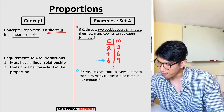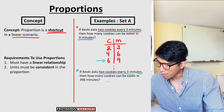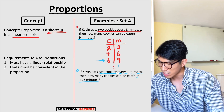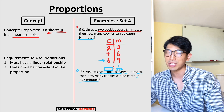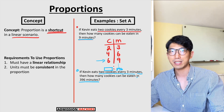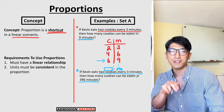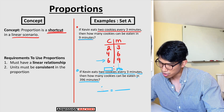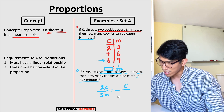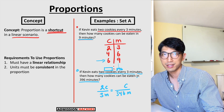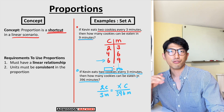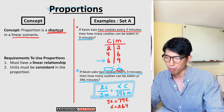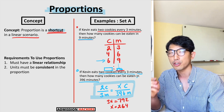But the next question: if Kevin eats two cookies every three minutes, how many cookies can he eat in 396 minutes? One way is to build the table all the way down to 396 minutes, but that's a big waste of time on the SAT. To shortcut yourself to the answer, that's where proportion comes in handy. Proportion looks like this: two cookies over three minutes equals x cookies over 396 minutes. You cross multiply to find x.